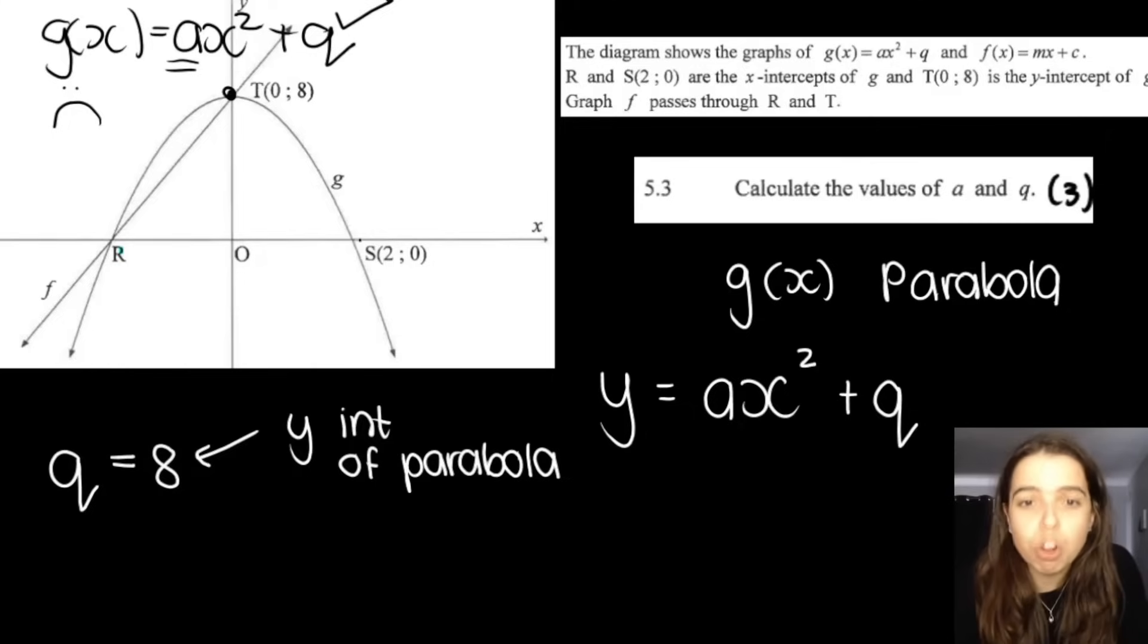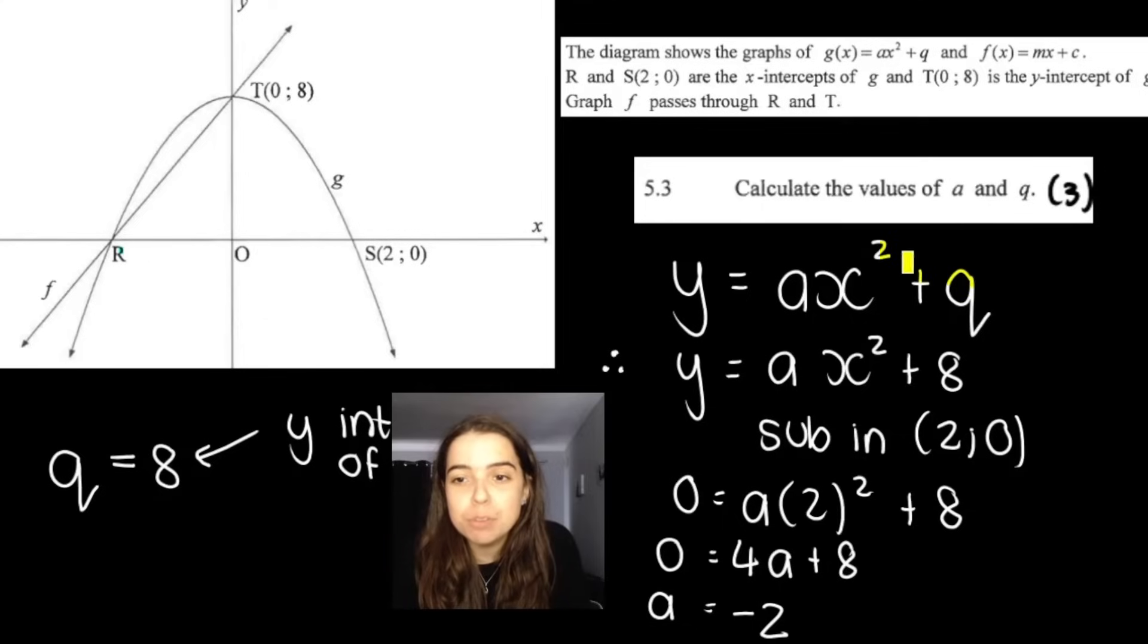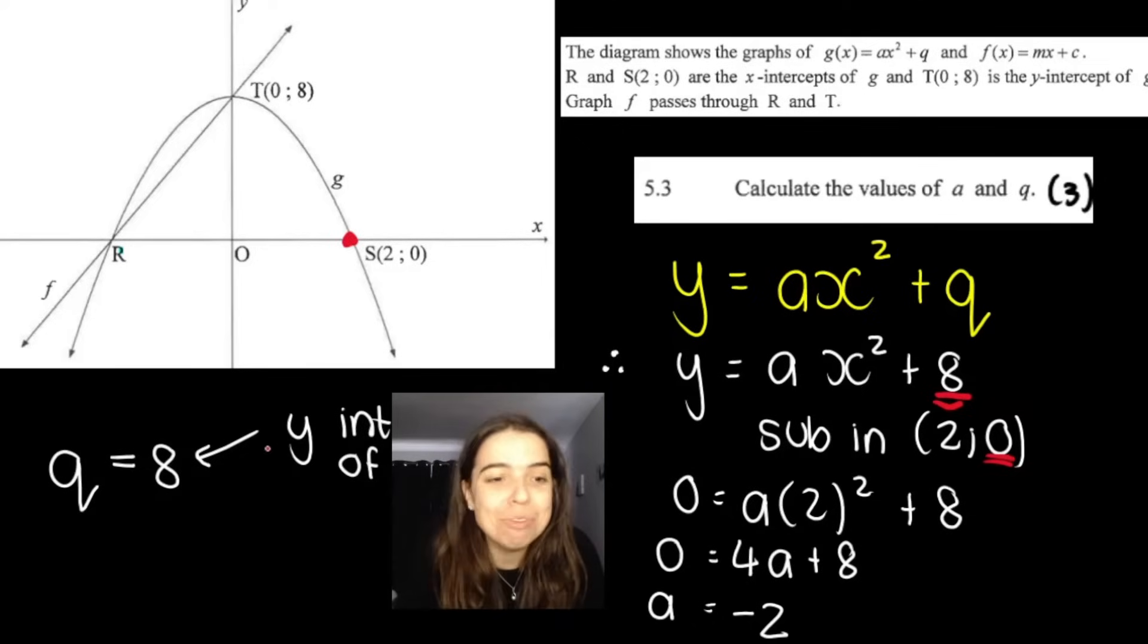If you know q and you have another coordinate on the graph, so here we have s that is on the parabola, we can sub s into y and x. Remember g of x is basically your y. It's your output value. If we sub in 2 and 0 into the place of x and y, we can solve for a. So you write your equation of the parabola first. Then what I did is I subbed in my value for q, which we said was 8. Then I take another point on the parabola. I would use s because it was given to us. So I subbed in 2 and 0. 2 goes in the place of x. Remember your brackets, remember to square it. 0 goes in the place of y. And we solve for a. A is negative 2. There we go. We found the values of a and q.